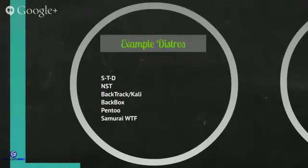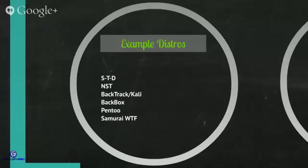There are a number of examples out there: STD, NST, what was formerly known as Backtrack and is now known as Kali — that's the distribution you're using in this class — Backbox, Pintu, Samurai WTF, which stands for web testing framework. There are a lot of distributions. This is just a small fragment of them, and they all have a various number of tools with different focuses.